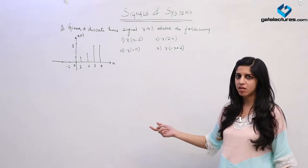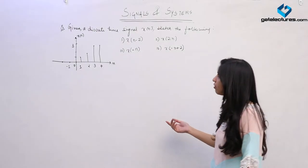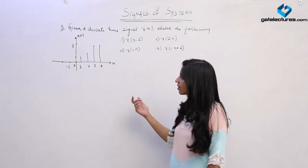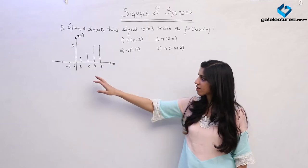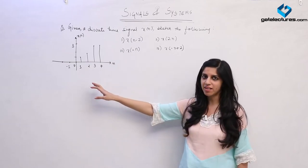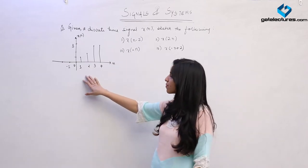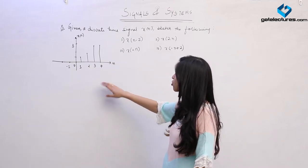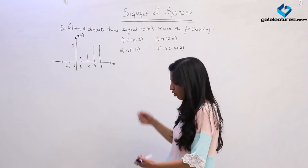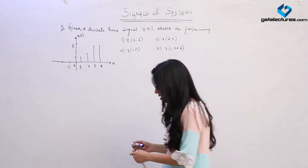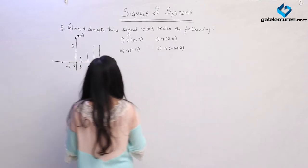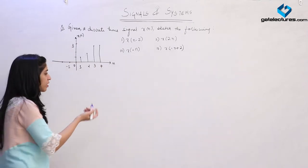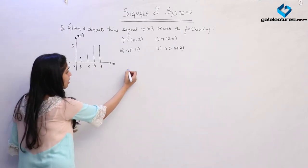Now we look at a similar question, a similar model for a discrete time signal. They have given us a signal X(n), a discrete time signal, and they are asking us to perform the given operations. We are going to look at them one by one as we have done earlier.